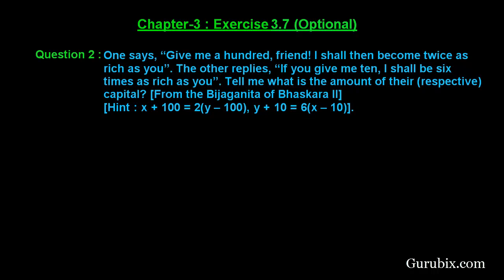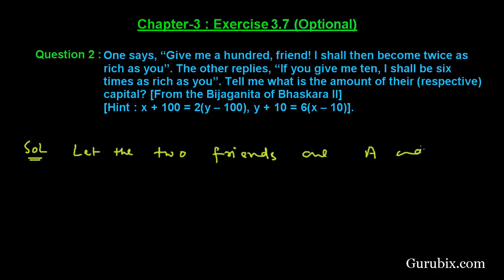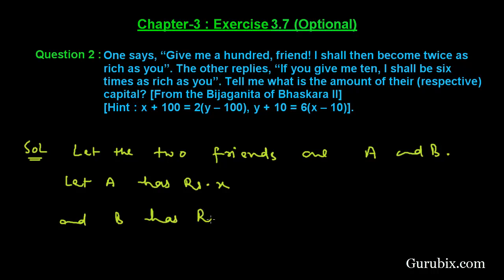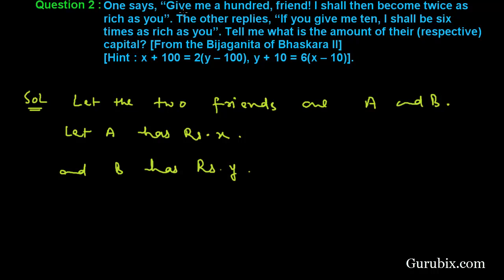This is a very interesting question — it is actually from Beej Ganit of Bhaskara the Second. Let us see how to solve it. We shall let the two friends be A and B, where A has rupees x and B has rupees y. Using the information given in the question, we have two conditions.